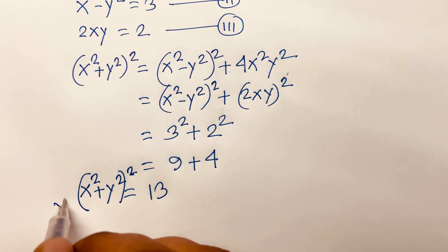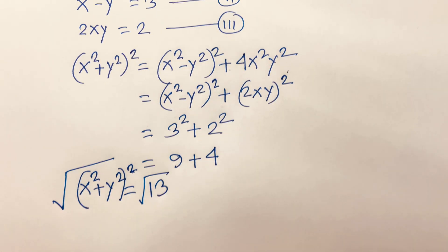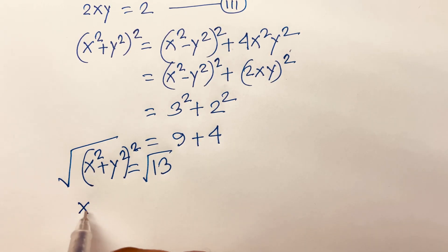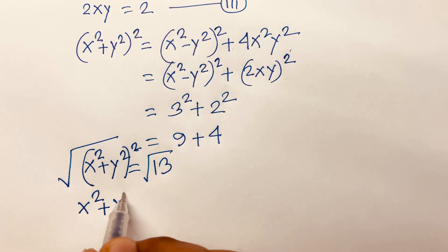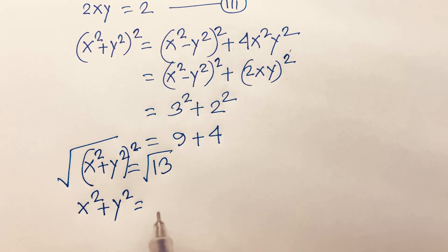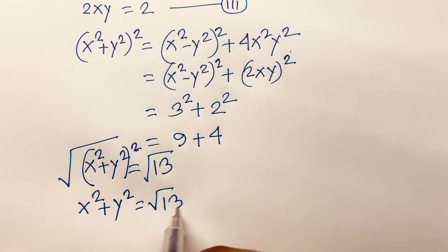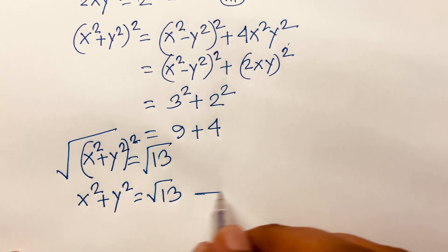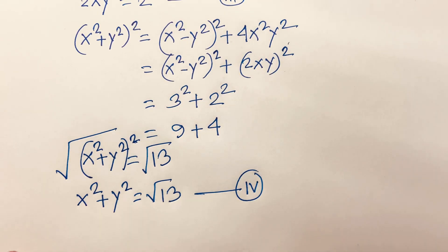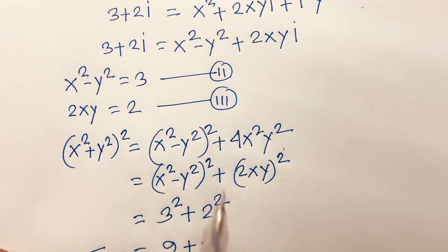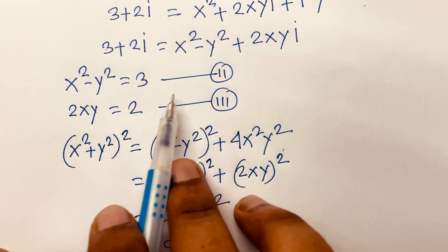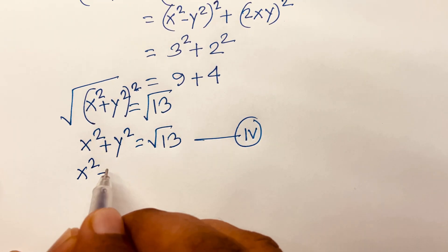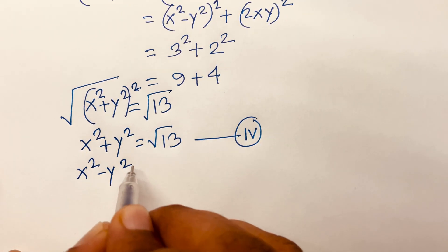Taking the square root of both sides, the square root cancels, so we find x² plus y² equals √13. This is our fourth equation, and our second equation is x² minus y² equals 3.